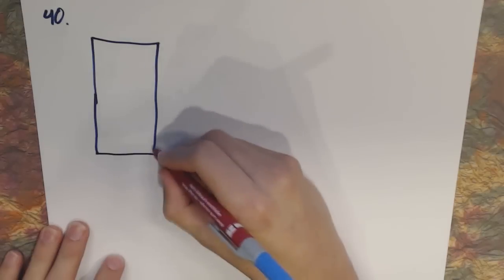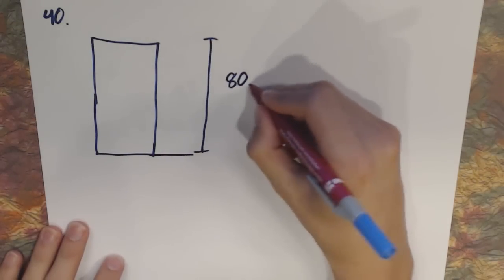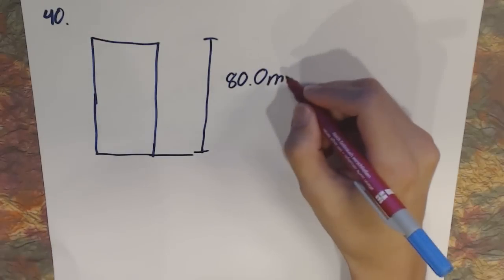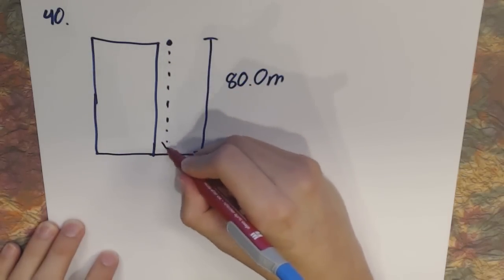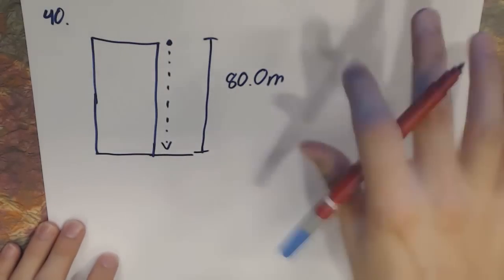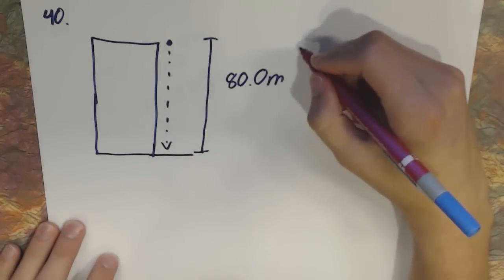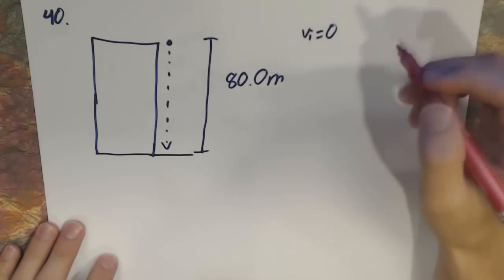Question 40 reads: a worker drops a wrench from the top of a tower 80.0 meters tall. With what velocity does the wrench strike the ground? The tower is 80.0 meters. Since it says it's dropped — meaning it's not thrown downwards, just let go — the initial velocity equals zero. That's something you have to know: when something is dropped, initial velocity is zero.